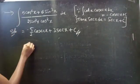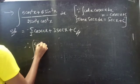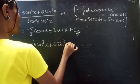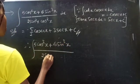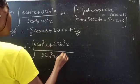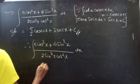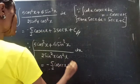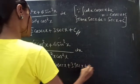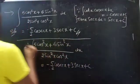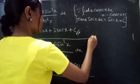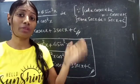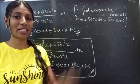Therefore, the integral of 6cos³x plus 6sin³x divided by 2sin²x times cos²x dx equals minus 5/2 cosecantx plus 3 secantx plus c. Fine. So we have seen this problem from integration in this video. Hope you will understand. We will see you in the next video, bye bye.